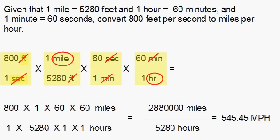Now we multiply the numbers that we have left. We have the 800 times 1 times 60 times 60 and miles left in the numerator. We have the 1 times 5,280 times 1 times 1 hours in the denominator. We multiply those numbers out.